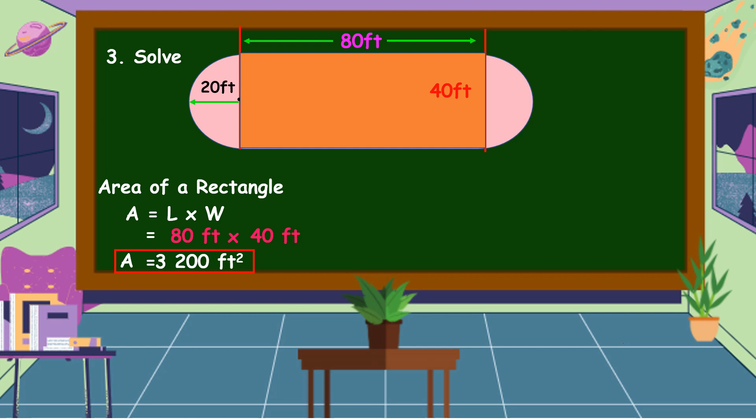Combining the two semi-circles on both ends of the figure will result to a circle. So, let's find the area of a circle. To find the area of a circle, we are going to use this formula: Area equals pi radius squared.